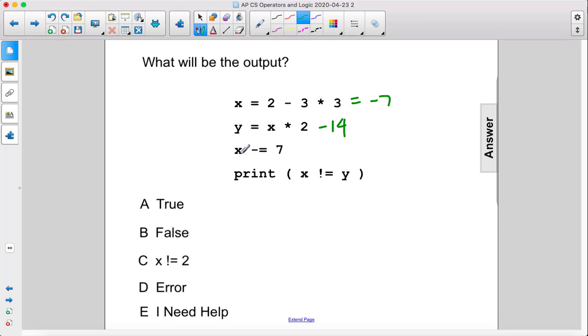Then we're gonna take the current value of x and subtract seven from it. So now negative seven minus seven gives us negative 14.